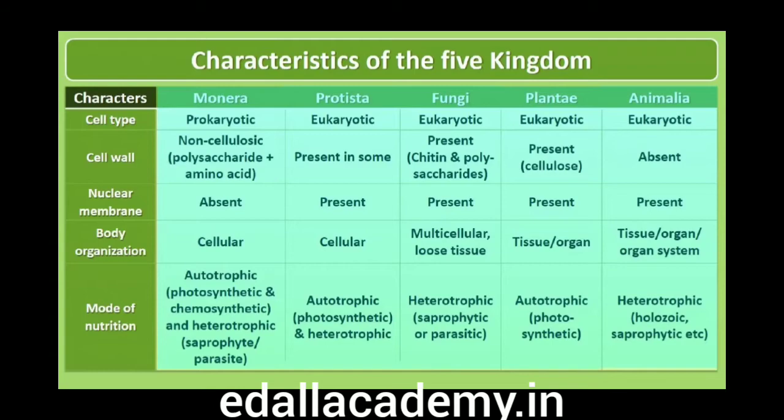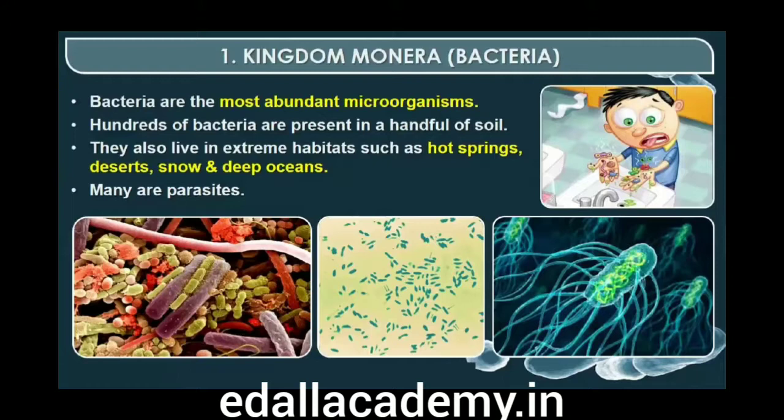2.1 Kingdom Monera. Bacteria are the sole members of Kingdom Monera. They are the most abundant microorganisms. Bacteria occur almost everywhere — hundreds of bacteria are present in a handful of soil. They also live in extreme habitats such as hot springs, deserts, snow and deep oceans where very few other life forms can survive. Many of them live in or on other organisms as parasites.